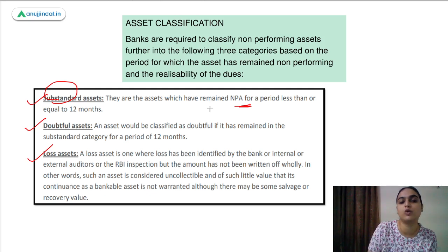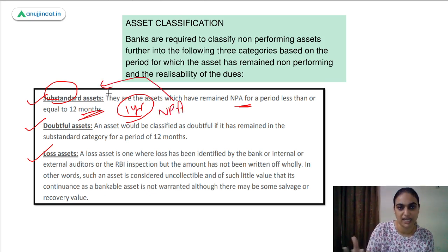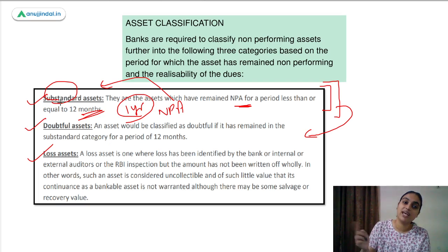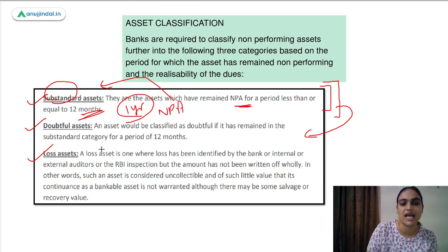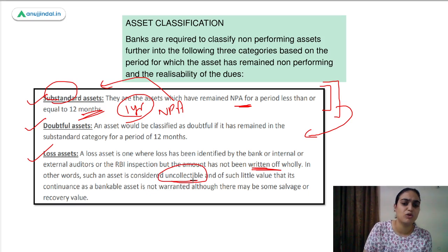Substandard assets are those which remain in the NPA category for a period less than or equal to 12 months — up to one year. Doubtful assets are those which remain in the substandard category for a period of 12 months — so after one year in NPA, the next year in substandard makes it a doubtful asset. Loss assets, as the name suggests, are those which the bank feels it will not be able to recover, though they may not yet have been written off — they are uncollectable, and if realized, very little value is recovered.